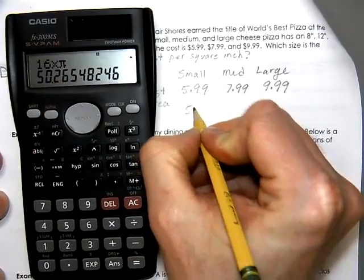Now, we'll take our 7.99, and divide that by 113.10, and we're going to get 7 cents. And then our 9.99, divided by our 201.06, gives us just about 5 cents for every square inch. That's showing us that the large pizza, which probably isn't much of a surprise, the large pizza is the best deal. Which size is the better deal for the money? The large pizza is the best deal. And I gave my explanation by showing my work on why that was true.